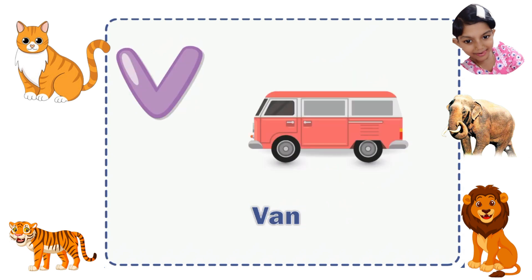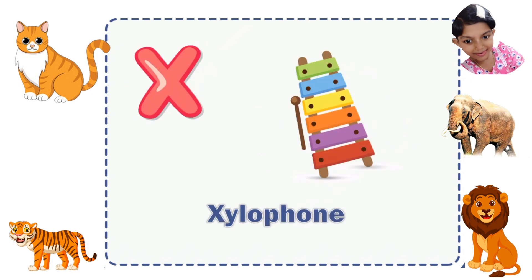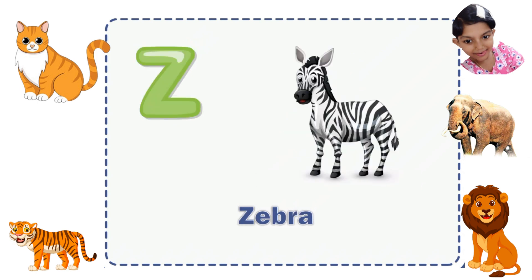V for Van, W for What, X for Xylophone, Y for Yacht, Z for Zebra.